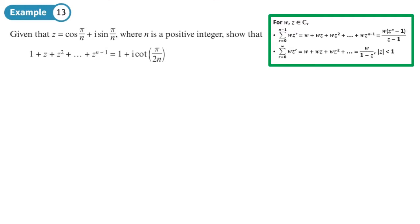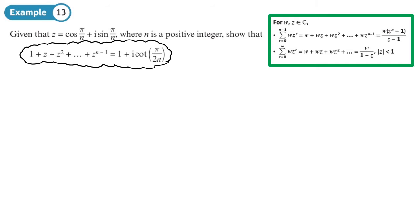This is quite a complex example — there's a lot going on. There are some things that you may not necessarily think are obvious to do, so we're going to take our time. We're going to go through this proof, which is to show that the finite sum 1 + z + z² + ... gives you 1 + i·cot(π/2n).